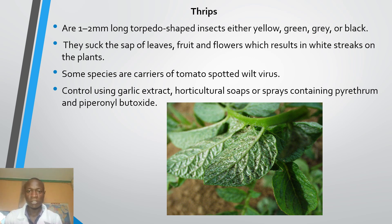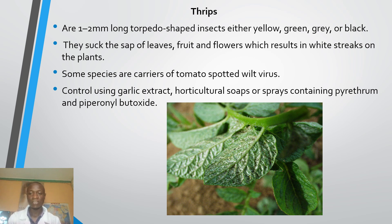How can we control these thrips on our farms? We can use garlic extract, or a horticultural soap, or sprays containing pyrethrum oil and piperonyl butoxide.